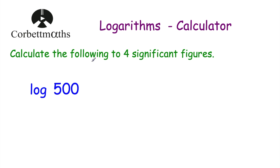Our next question says calculate the following to four significant figures. We've been asked to work out log of 500. Remember, if there's no base, the base is 10. So this is log to base 10 of 500 — what power do we raise 10 by to get 500? Now 10 squared is 100 and 10 cubed is 1000, so it's going to be between two and three. Let's use our calculator to work that out.